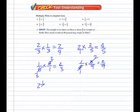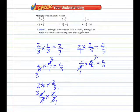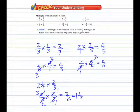Number five: two and one-fourth times two-thirds. The answer is going to be less than two and one-fourth. Change two and one-fourth to an improper fraction: two times four is eight, plus one is nine — nine over four, times two over three. Simplify by dividing by three here and here, and by two here and here. The answer is three over two, which is one and a half.